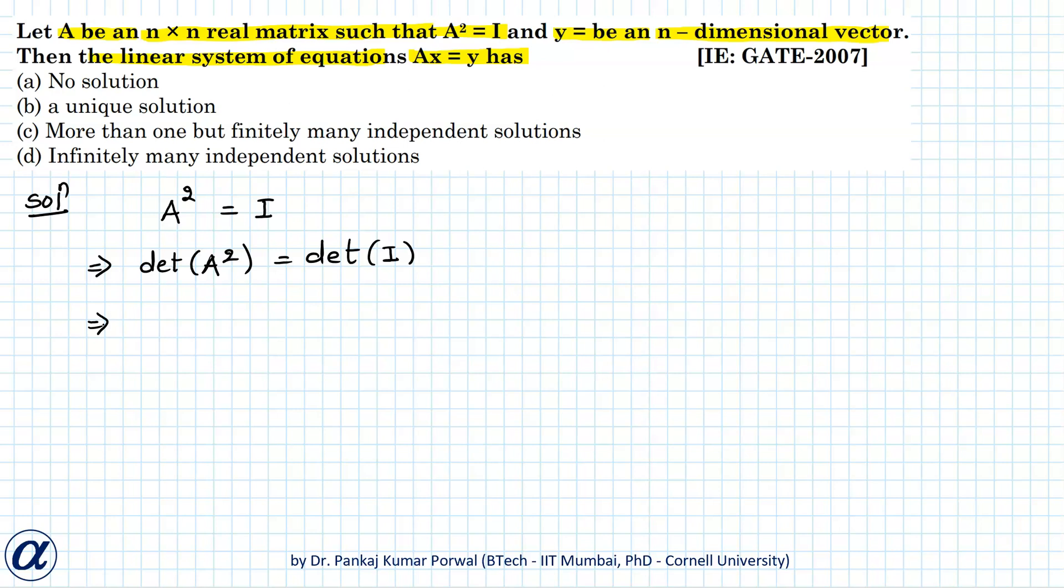That gives me determinant of A squared equals the square of determinant of A, and determinant of identity matrix is 1, so this gives me determinant of A equals plus or minus 1.